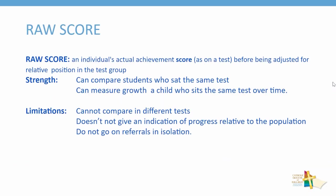A raw score is simply an individual's actual achievement on an assessment — 8 out of 10 or 56 out of 80. Raw scores can compare students who sit the same tests, and they can also measure growth if a child sits the exact same test over time. The limitations are that raw scores cannot be used to compare students' progress across different tests, nor do raw scores give an indication of the progress of a child relative to the population or their year level. Raw scores do not go on referrals in isolation.